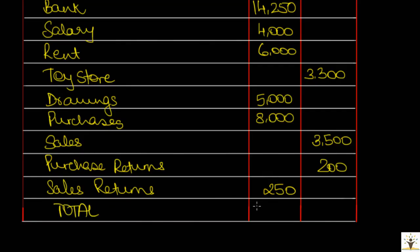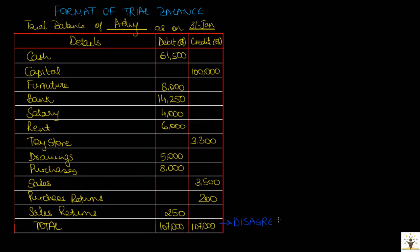If we take the total of two columns of the trial balance, we get $107,000 in both the columns. Any disagreement in the total indicate that one or more errors have been committed in the accounting process.